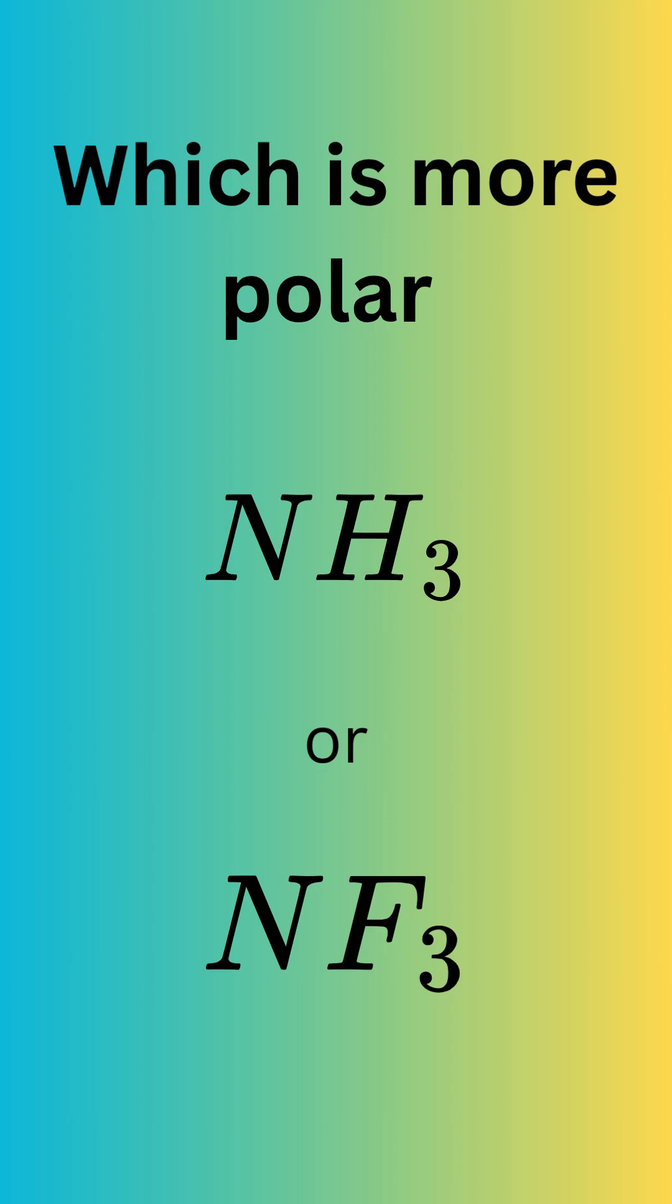Which is more polar, NH3 or NF3? Both NH3 and NF3 have a trigonal pyramidal molecular geometry due to the presence of a lone pair of electrons on the central nitrogen atom.